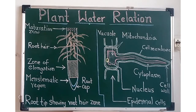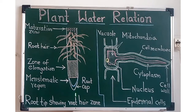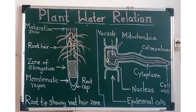Water and minerals are transported by the root to upper parts of the plant through xylem. Plants absorb a large amount of water — about 90 percent — which is taken up by the roots, passes through the stem, and out through the leaves as water vapors. Plants use water for several purposes, such as transportation of substances.